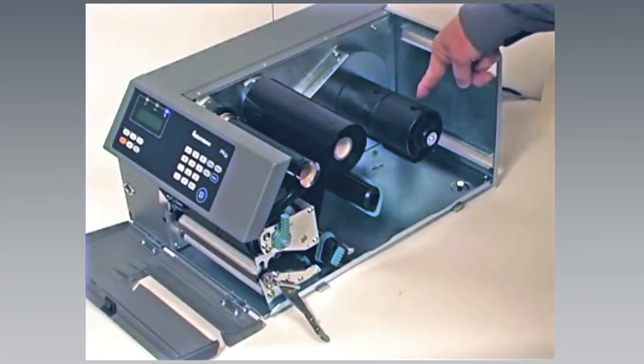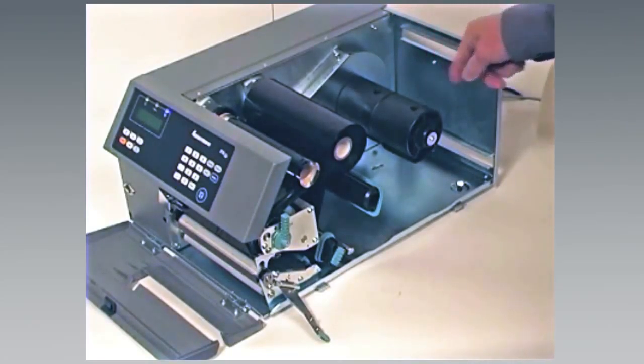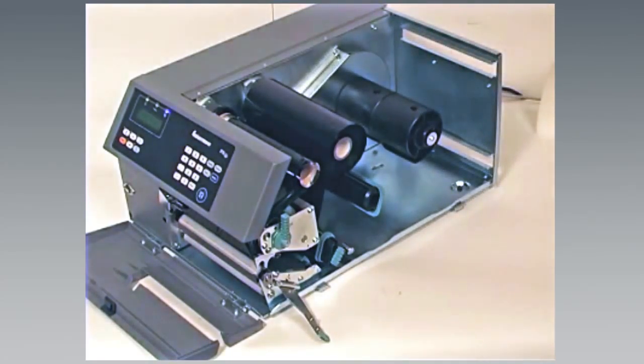If you are using a media roll with a 76mm 3-inch core, install a 3-inch adapter on the media supply hub before placing the media on the hub. Instructions for this procedure are in the printer's user's guide, which can be downloaded from the Intermec website.